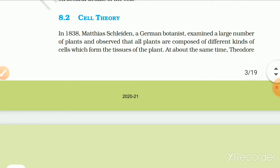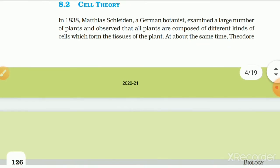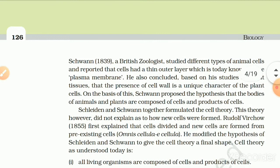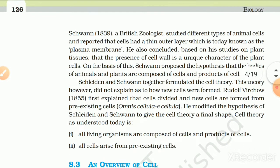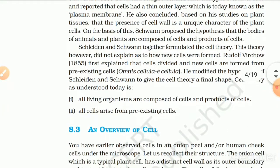8.2 Cell Theory. In 1838, Matthias Schleiden, a German botanist, examined a large number of plants and observed that all plants are composed of different kinds of cells which form the tissues of the plant. At about the same time, Theodore Schwann, 1839, a British zoologist, studied different types of animal cells and reported that cells have a thin outer layer, today known as the plasma membrane. He also concluded, based on his studies on plant tissue, that the presence of a cell wall is a unique character of the plant cell. On this basis, Schleiden proposed the hypothesis that the bodies of animals and plants are composed of cells and products of cells. Schleiden and Schwann together formulated the cell theory.